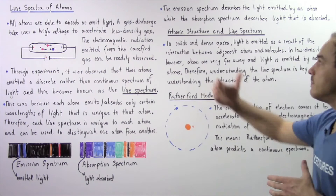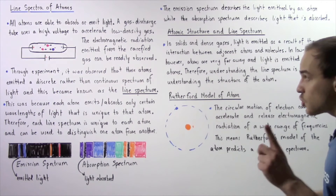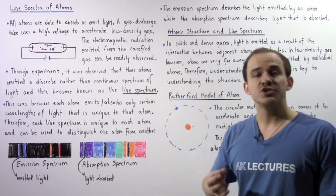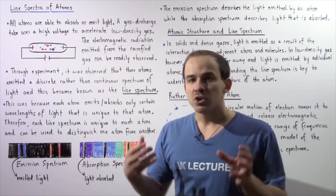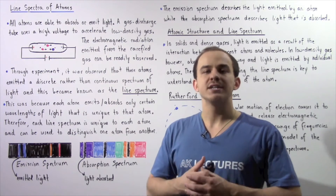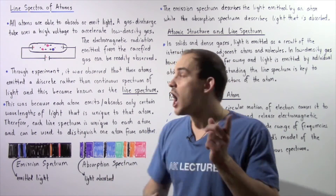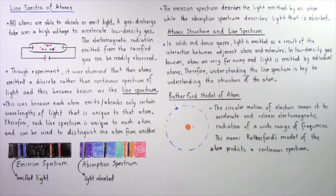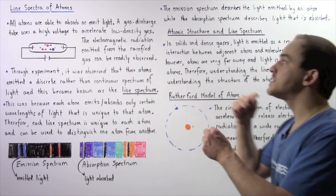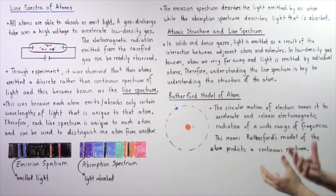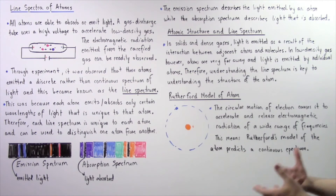What is the relationship between atomic structure and the line spectrum of an atom? In solids, liquids, and very dense gases, electromagnetic radiation is released due to interactions between closely proximate atoms and molecules, producing a range of wavelengths and a continuous spectrum. In rarefied gases, atoms are found very far apart, so light is emitted by individual atoms and the spectrum is discrete rather than continuous. This implies that understanding where the line spectrum comes from and how the light is emitted is key to understanding the actual structure of the atom.